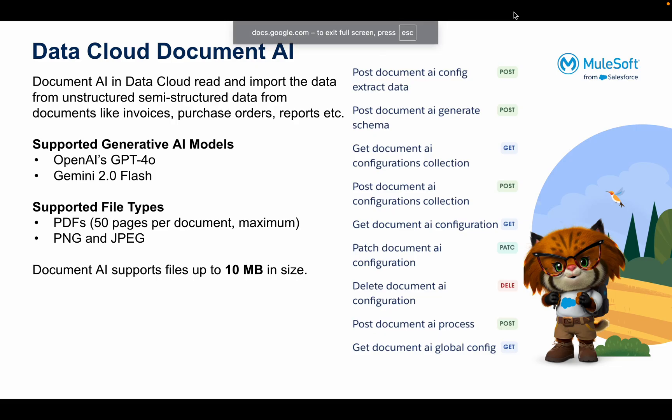Hello everyone, my name is Jitendra Bapna. In today's video we're going to explore Document AI, which has been recently launched as part of Salesforce Data Cloud. Document AI is used to read or extract unstructured or semi-structured data from documents like PDF files or image files. For example, you can use Document AI to extract all the information from an invoice, or from any purchase order or other document.